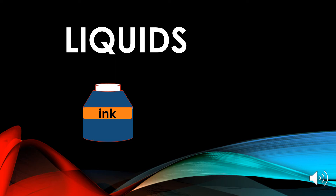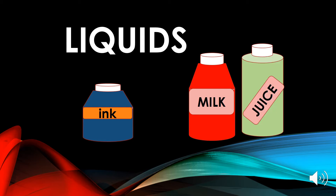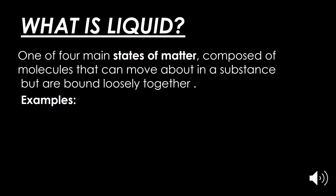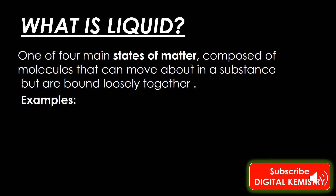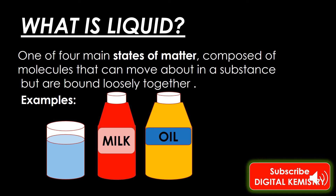Hello friends, welcome back to my channel Digital Chemistry. In this video we will discuss about the second state of matter, that is liquid — what is liquid and how can we distinguish it from the other three states of matter. Liquid is one of the four main states of matter, composed of molecules that can move about in a substance but are bonded loosely together. Examples of liquids are water, milk, oil, and juice.